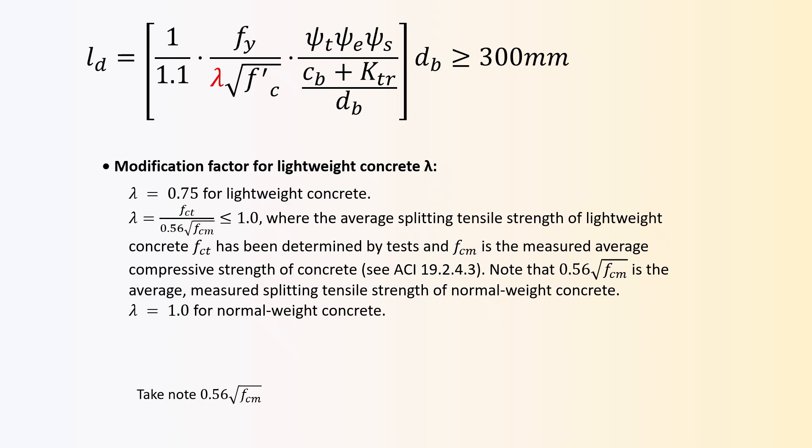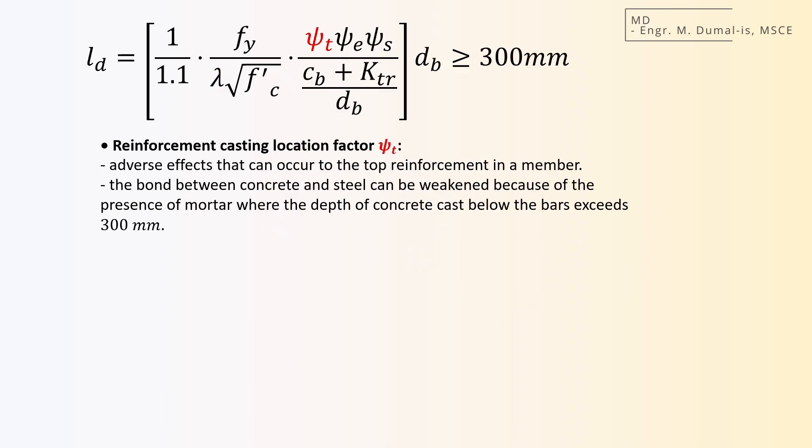Note that the 0.56 square root of fc' is the average measured splitting tensile strength of normal weight concrete. Next, the casting location factor ψt is the factor that reflects the adverse effects that can occur to the top reinforcement in a member. During the placement of concrete, water and mortar migrate vertically through the member and collect on the underside of the reinforcing bars.